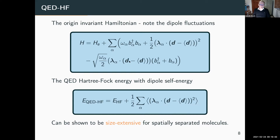With this, we can calculate the QED Hartree-Fock energy — it's the normal Hartree-Fock energy plus the dipole self-energy term. It's fairly easy to show this is size extensive, even though we have a square here. When you have a product wave function in Hartree-Fock, the energy becomes additive for two spatially separated molecules. This also means that Hartree-Fock is not able to describe the long-range interaction correlation between molecules obtained via the cavity modes.